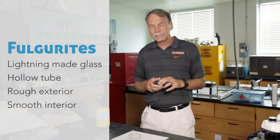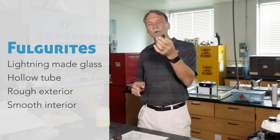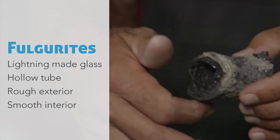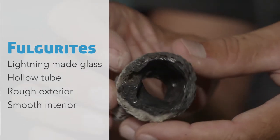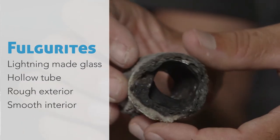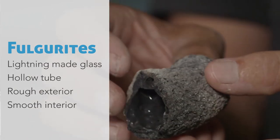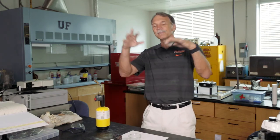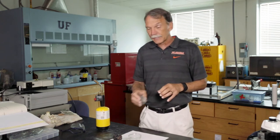Another natural source of glass is lightning. Lightning can make glass — it makes what we call a fulgurite. When lightning strikes the ground, it actually melts the ground and forms a fulgurite. This is a fulgurite: you can see it's a tube formed when lightning struck the ground. The rough outside is where the sand didn't quite melt, and the smooth, hollow inside is where it all melted — not quite like the nice glass sculpture Hollywood depicted in 'Sweet Home Alabama.'